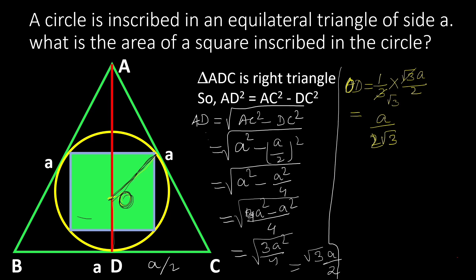Since we have half of the diagonal, we can find the total diagonal. The total diagonal of the square equals A/(2√3) × 2, which is equal to A/√3. As we know, a square is also a rhombus, and we can use the area of a rhombus formula to get the area of this square.